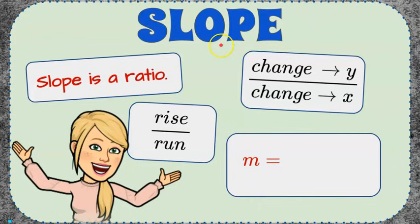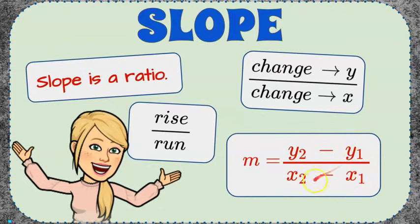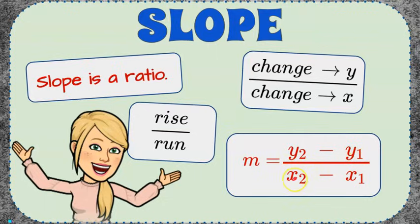m is the variable we use to refer to slope. Here's our slope formula. We are using two points: point 1 uses subscript 1, and point 2 uses subscript 2. These points are interchangeable — it doesn't matter which point you call point 1 or point 2, as long as the x and y coordinates in the numerator are from the same point and the x and y coordinates in the denominator are from the same point. You take one y-coordinate minus the other to get your change in y, over one x-coordinate minus the other to get your change in x.